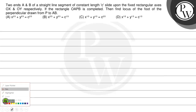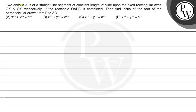Hello students, let us read the question. Two ends A and B of a straight line segment of constant length C slide upon the fixed rectangular axes OX and OY respectively. If the rectangle OAPB is completed, then find the locus of the foot of the perpendicular drawn from P to AB. Option A: x^(2/3) + y^(2/3) = c^(2/3). Option B: x^(2/3) + y^(2/3) = c^(1/3). Option C: x^(1/3) + y^(1/3) = c^(2/3). Option D: x^(1/3) + y^(1/3) = c^(1/3).